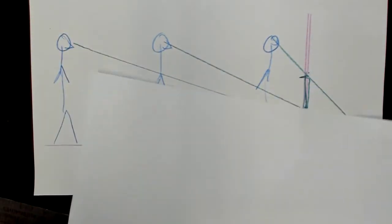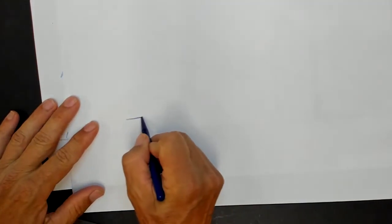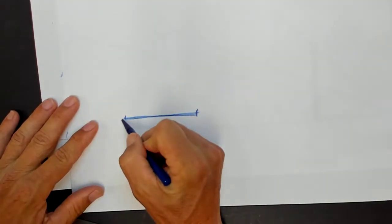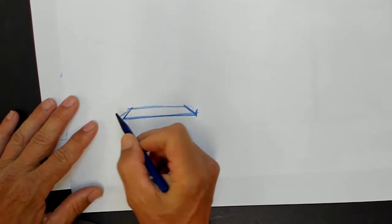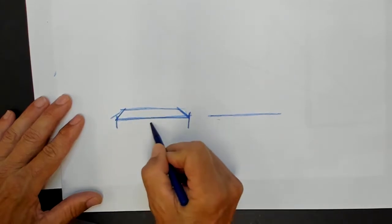When the viewer is really far away from this shape, this rectangle, it's going to be very skinny. And as the viewer gets closer to it, this distance does not change.